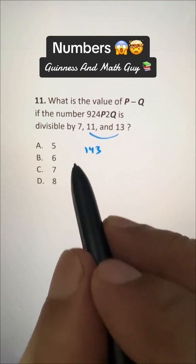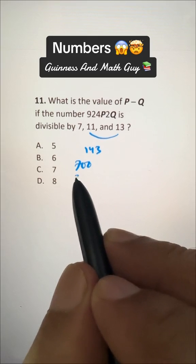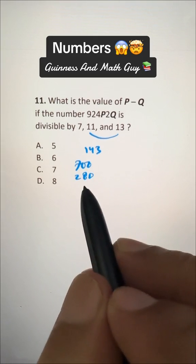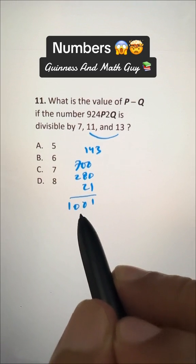143 times 7: 7 times 1 is 7, so 700; 7 times 4 is 28, so 280; and 7 times 3 is 21. So here we have 1001.